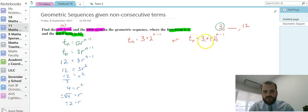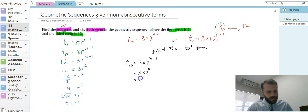Okay, so two formulas here. So that means that the 10th term, find the 10th term, that's going to be t10 equals 3 times 2 to the 10 minus 1, that's 3 times 2 to the 9, that's 1536.